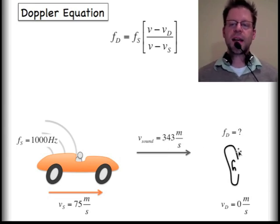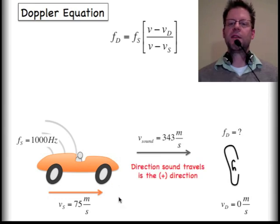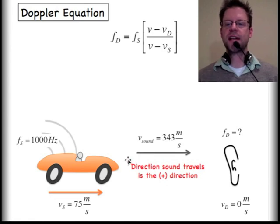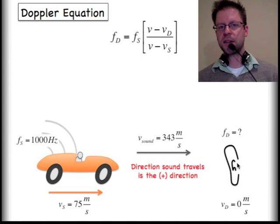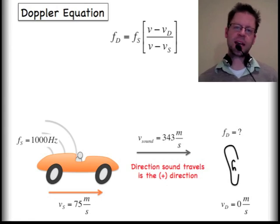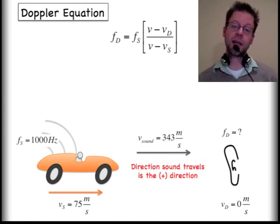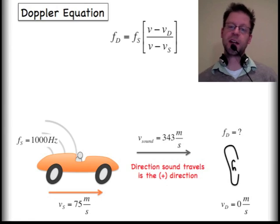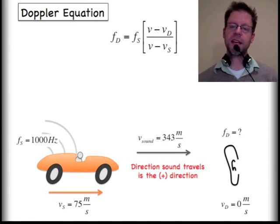So, over on this side, I have my ear that is indicating the detector. I want to know what frequency will this individual hear. We're going to say that they are standing stationary in this example. The way that I prefer to think of these problems is I always like to treat the direction that sound is traveling towards the detector as the positive direction. From there, I will make adjustments on any of my negative signs to account for that accordingly if it's moving in a different direction than sound. But, in this case, the right direction is the positive direction.